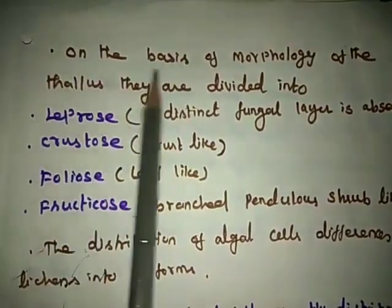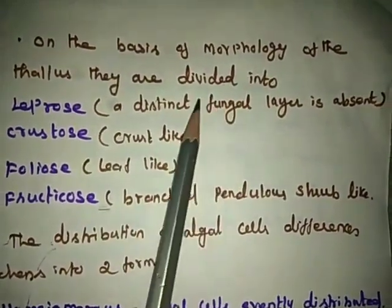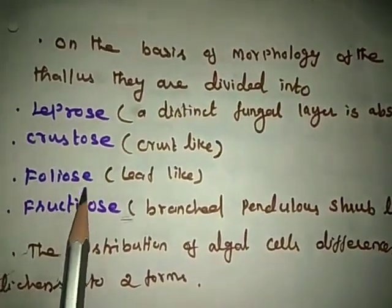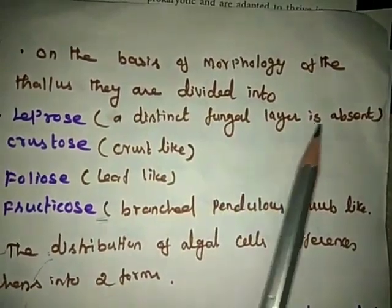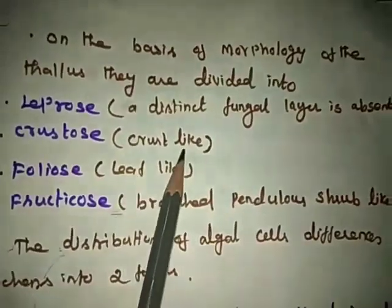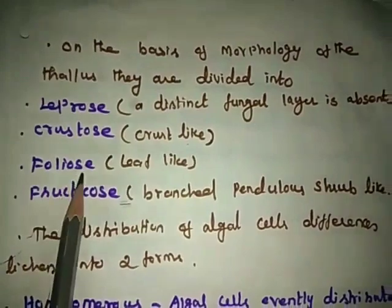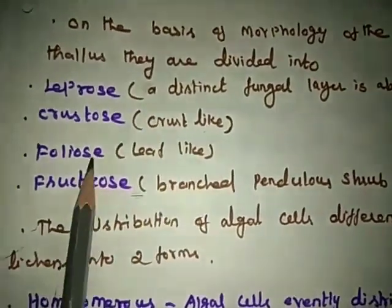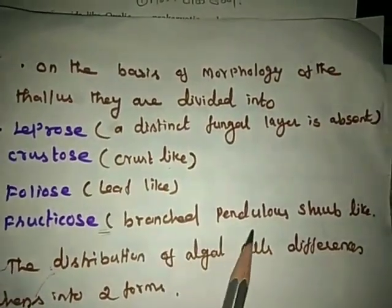On the basis of morphology of the thallus, lichens are divided into four types: leprose — a distinct fungal layer is absent; crustose — a crust-like thallus is present; foliose — a leaf-like structure is present; and fruticose — a branched, pendular shrub-like structure.